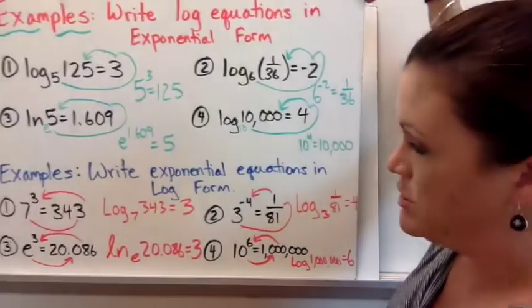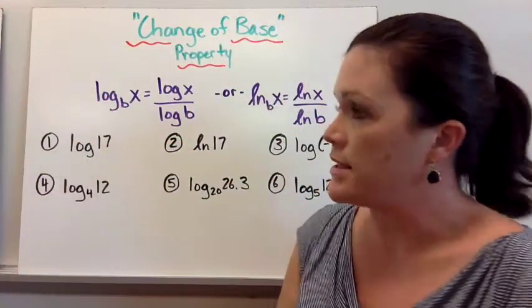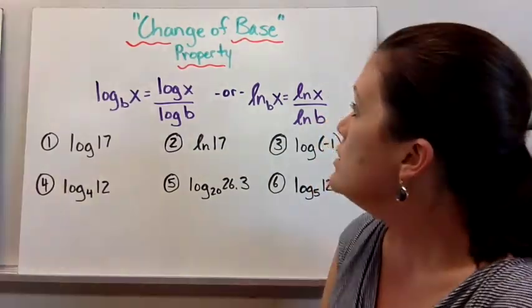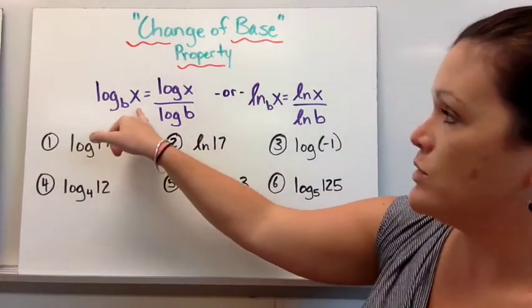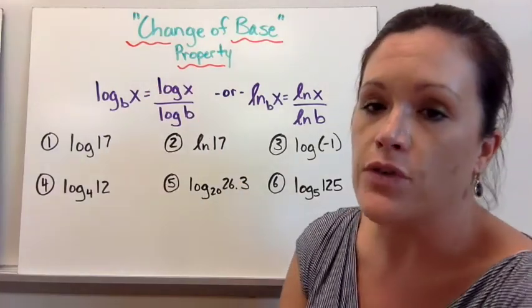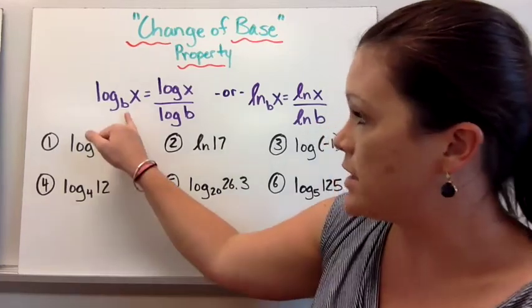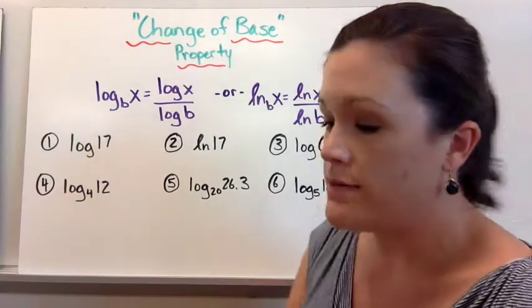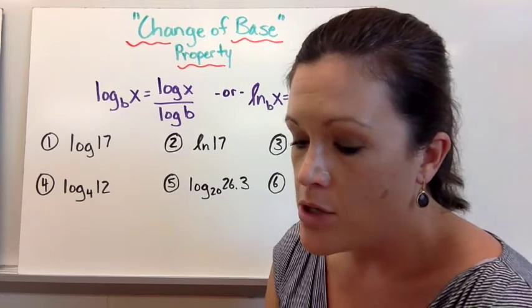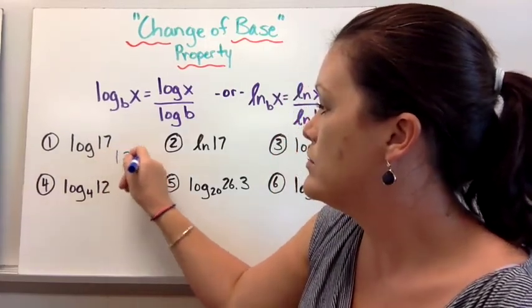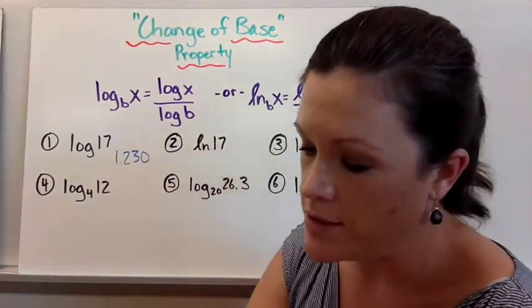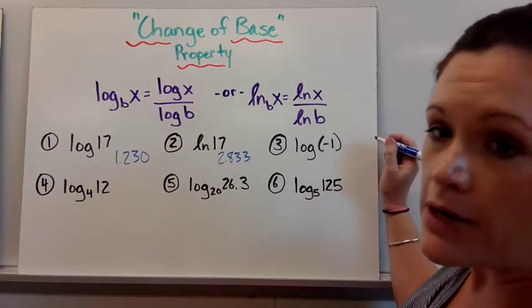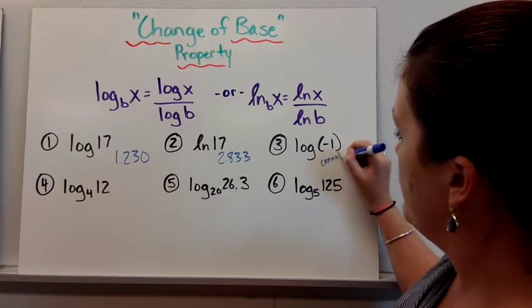Let's look at this other basic thing we need to know: change of base property. This helps us type things in our calculator that we otherwise wouldn't be able to. When we have log base b of x, we can type it as log of x divided by log of the base. This accounts for the fact that in our calculator the log button has a base of 10. For problems like 1, 2, and 3 you can type those directly. Log of 17 gives 1.230. Natural log of 17 gives 2.833. Log of negative 1 gives an error because you cannot take the log of a negative.